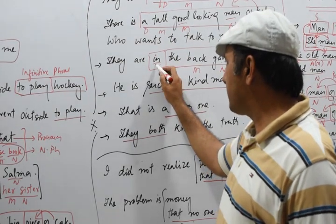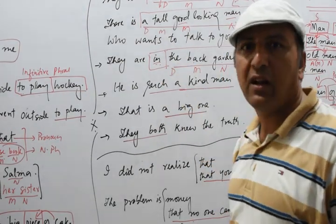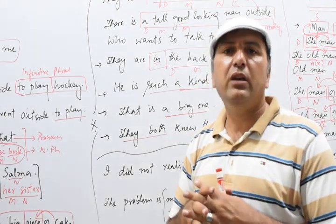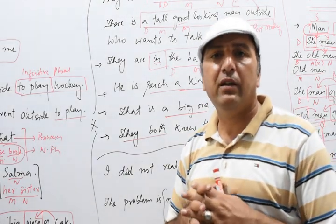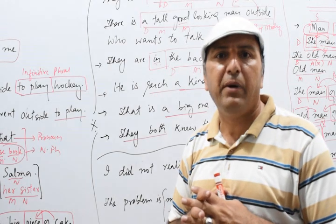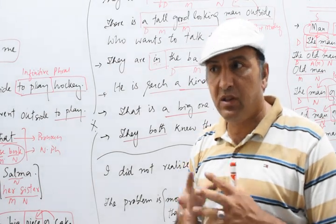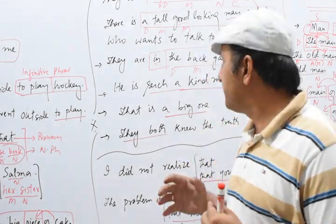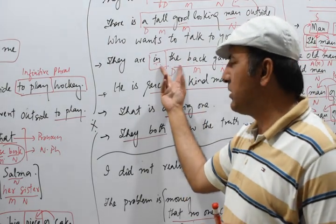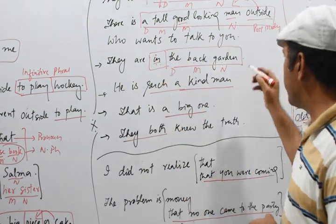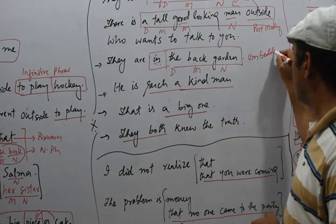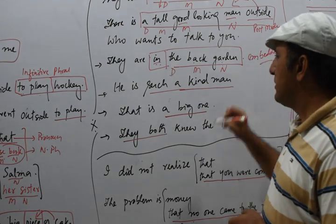So when the prepositional phrase and noun phrase are combined, in technical grammar terms we call it embedded — two phrases combined together, like this one. So it's an embedded structure.